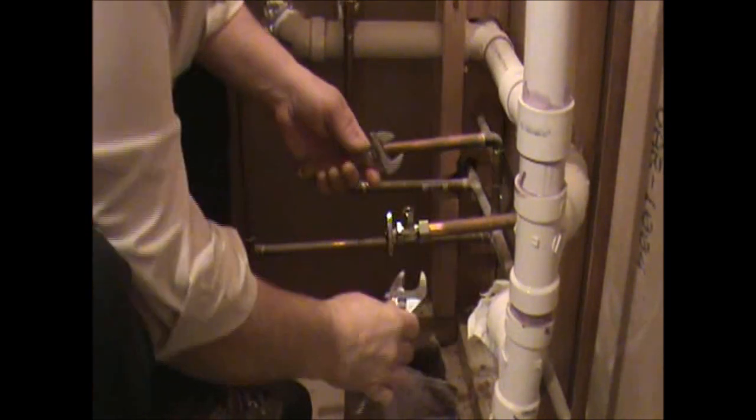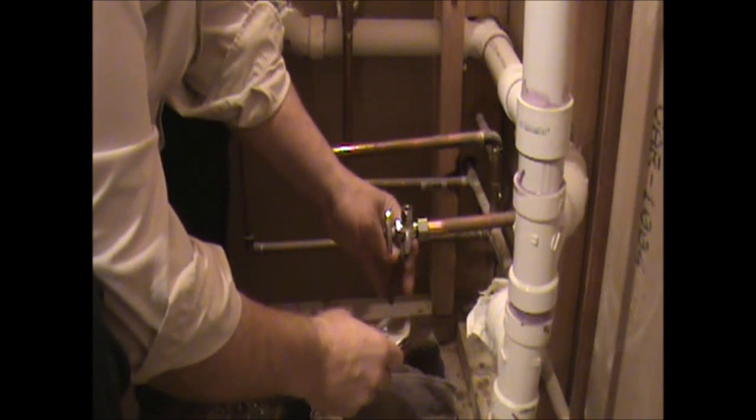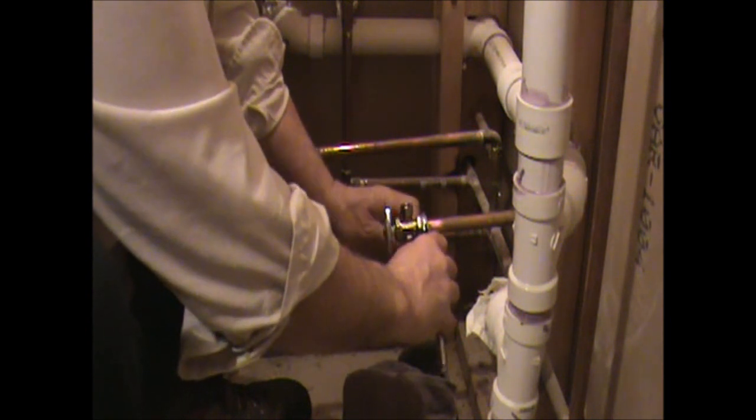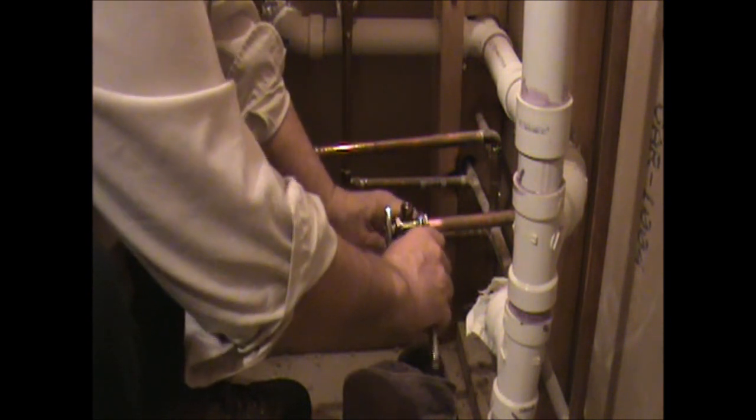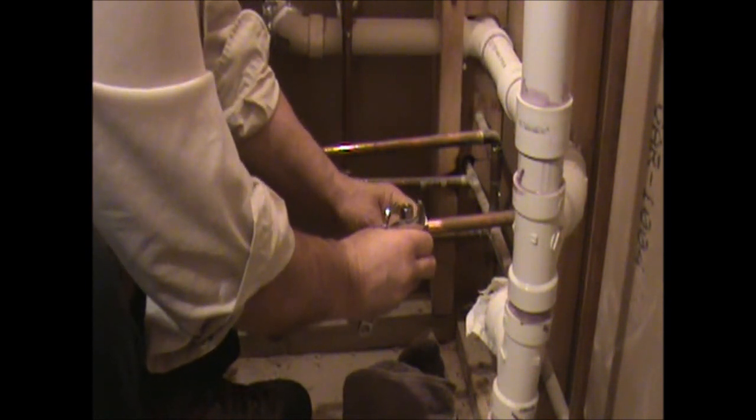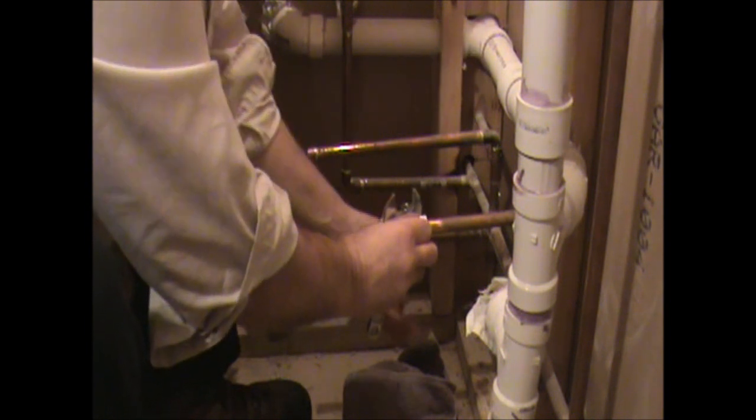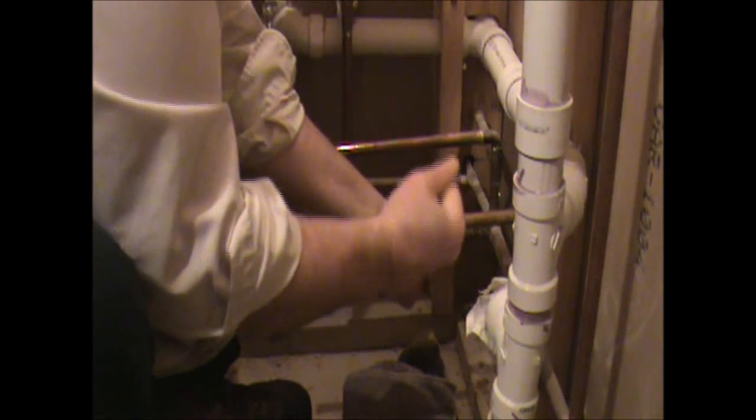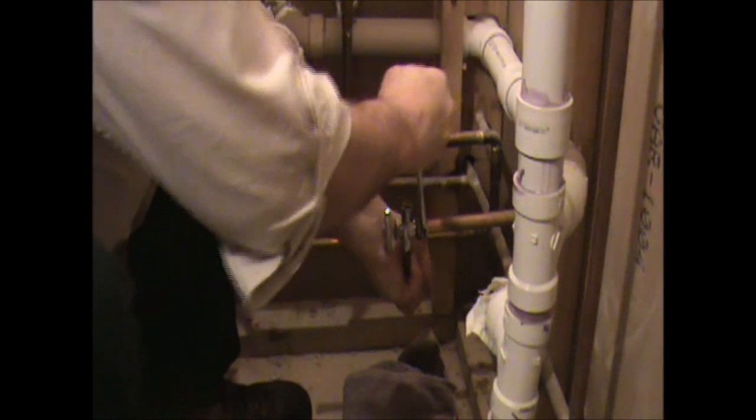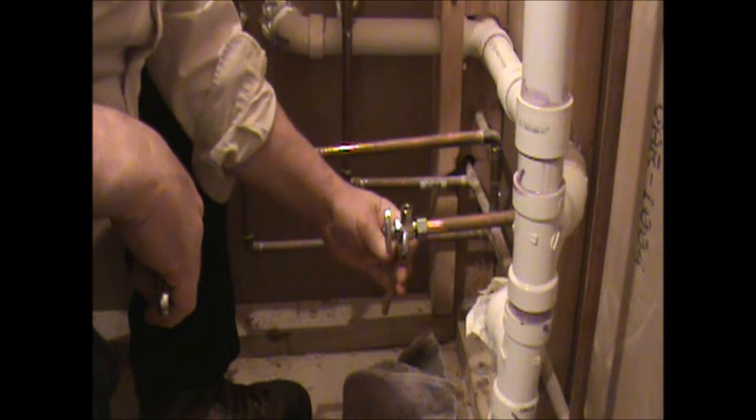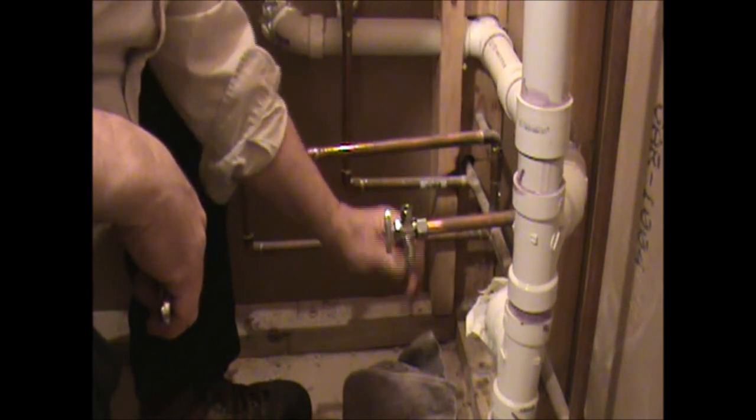So what you're going to do now is you're going to tighten it up, a couple of crescent wrenches. Now you always want to back this up. When I say back it up, you want to hold the valve itself while you're tightening it up. And it doesn't take a whole lot to tighten this up. Squeeze that bushing in there. And like I said, you don't want to tighten it too much. Just get it snug and then stop. Like I said, you can always tighten up a little bit more if you need to.